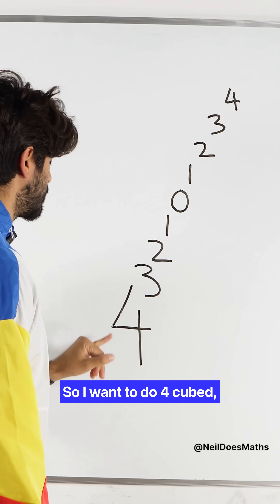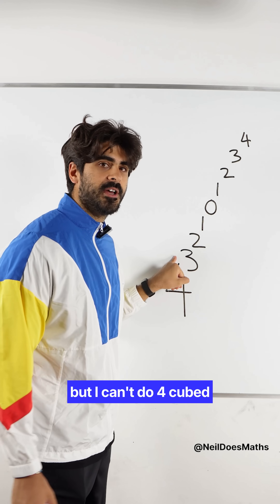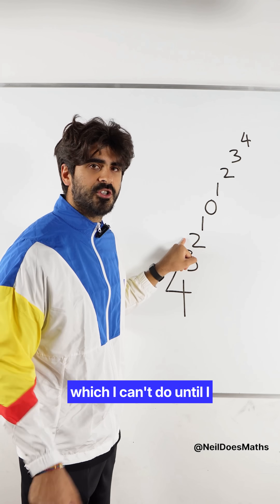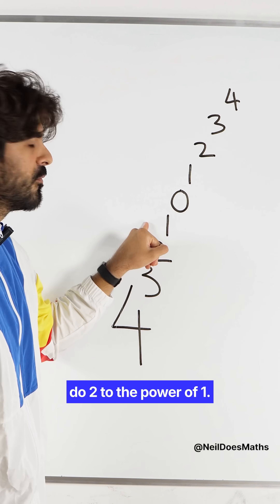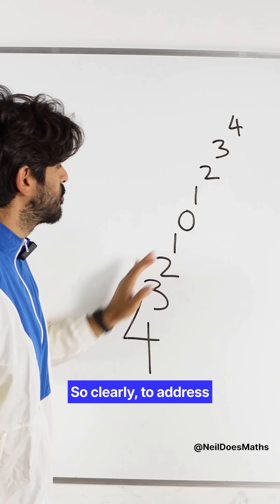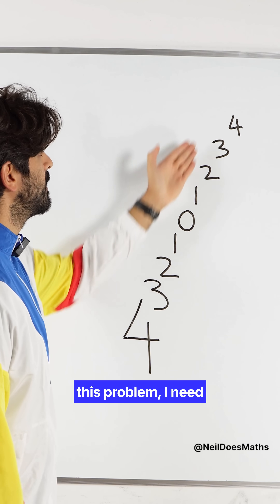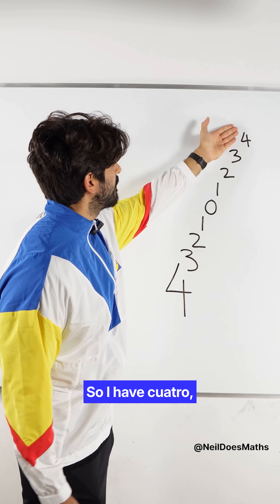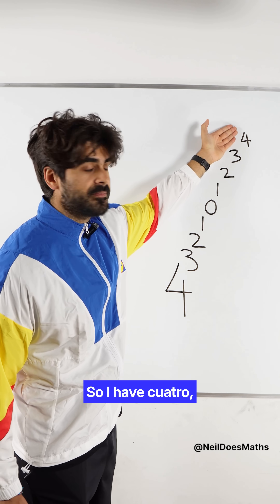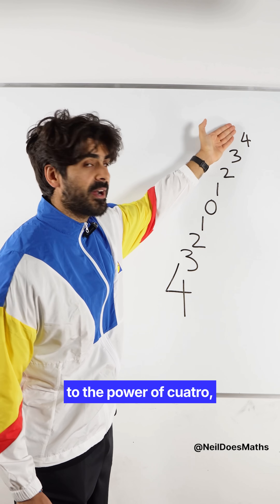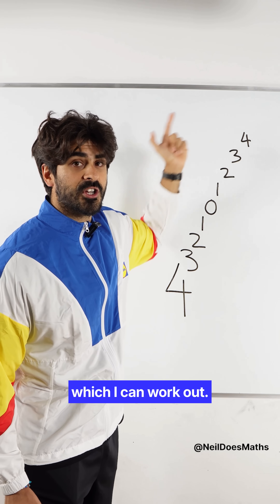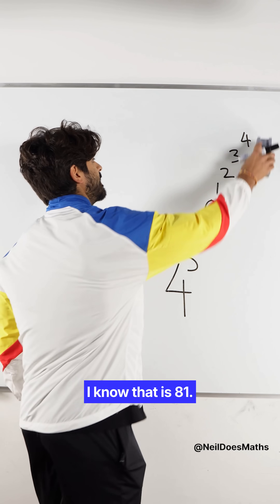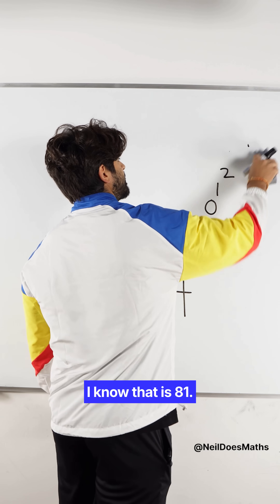To solve this, I want to do 4 cubed, but I can't do that until I do 3 squared, which I can't do until I do 2 to the power of 1. So clearly, to address this problem, I need to start from the top. I have 4, then 3 to the power of 4 — which I can work out — that is 81.